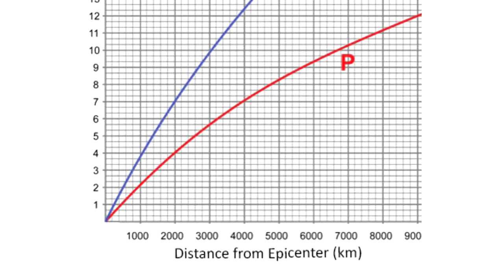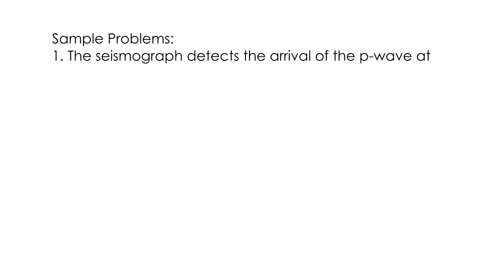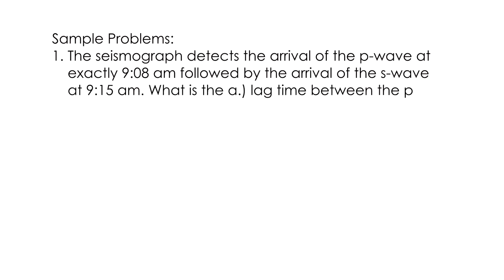To illustrate how the Wedge method is used, we answer some problems. For number one: the seismograph detects the arrival of the P wave at exactly 9:08 a.m., followed by the arrival of the S wave at 9:15 a.m. What is the lag time between the P and S wave and the distance of the epicenter to the seismic station?